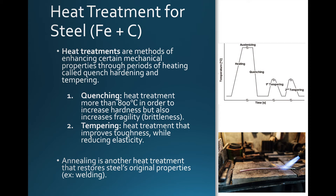These heat treatments enhance the mechanical properties of steel — we call this quench hardening and tempering, and there are two steps. Quenching is a heat treatment where we heat the alloy to over 800 degrees, which increases the hardness but also increases the brittleness. Tempering is the second step — a heat treatment that improves the toughness but reduces the elasticity. Annealing is another treatment where heat is used to restore the steel's original properties, for example in welding.